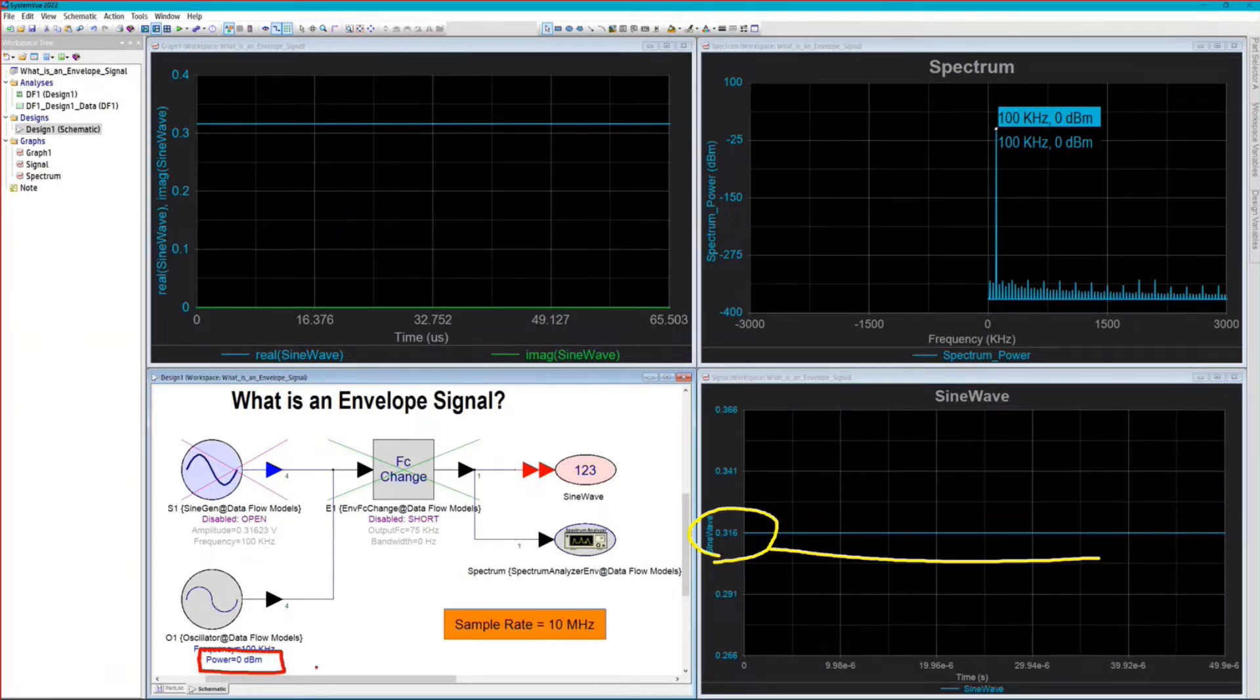It's because in this mode, SystemVue is not sampling the carrier. It's sampling the amplitude or the envelope of the carrier. And since the envelope of a sine wave is constant, we get a flat line over here on the graph, on the scope. And so this is the correct result, even though this may surprise some people.